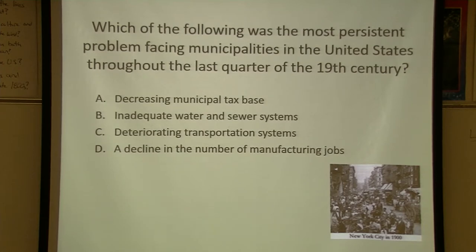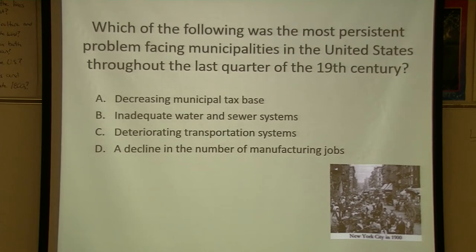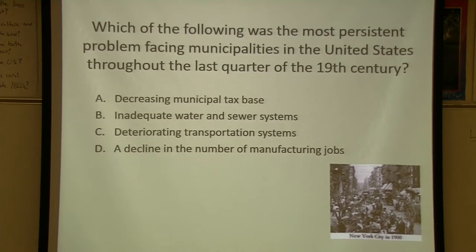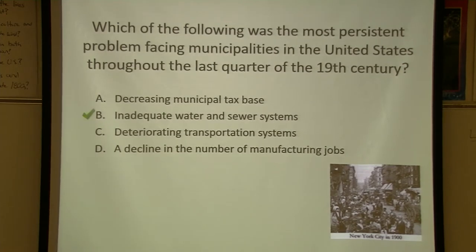This question is an example that could appear on the EOC. Notice the tricky vocabulary: 'municipalities' means cities. Also, 'the last quarter of the 19th century' means the 1800s — specifically 1875 to 1900. The 19th century is the 1800s, not the 1900s. Answers A and D would be correct if you're thinking 1975 to 2000, but this is an easy question written in a very hard way.